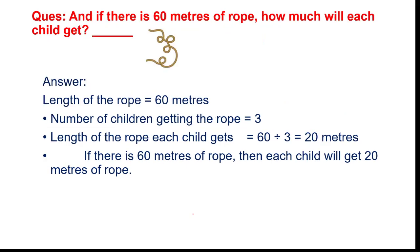Moving to the next page. If there is sixty metres of rope, how much will each child get? What is given: sixty metres of rope and three children. Sixty divided by three equals twenty metres. So if there is sixty metres of rope, each child will get twenty metres of rope.